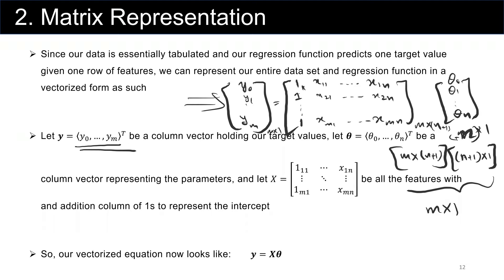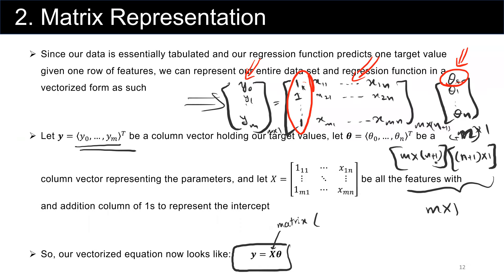Why is X an n+1 column matrix? Because we added another column of ones that multiplies theta sub zero. So we have a vector of parameters theta, a matrix X, and a vector of target values y. In matrix format: y equals X theta, where X is m by (n+1), theta is (n+1) by 1, and y is m by 1. This is the matrix representation for multivariate regression.